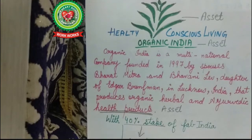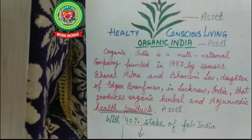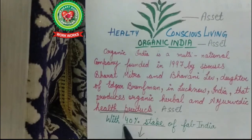The 40% stake is an asset, but it is also a liability. A liability is that amount which the company owes to others — which the company has to pay to others. Fab India must have invested in Organic India because it wants to be a part of it and earn some return from that investment. That return is called dividend. So at the same time, the 40% stakeholders represent assets of the company as well as a quality of liability.